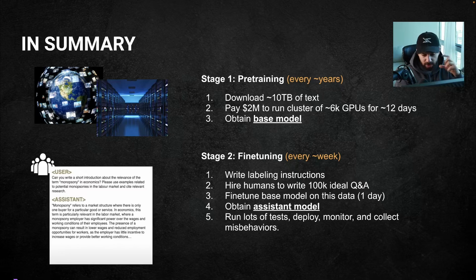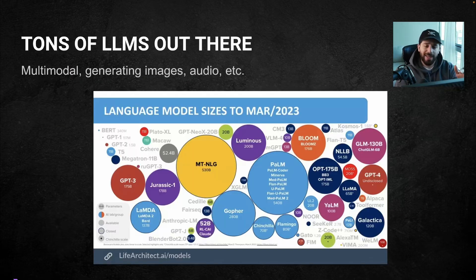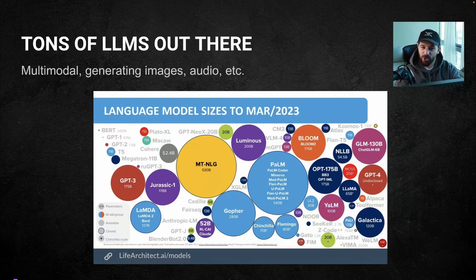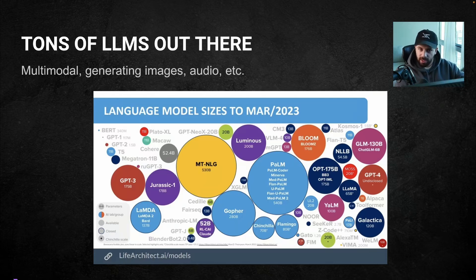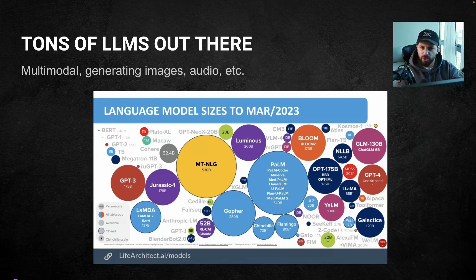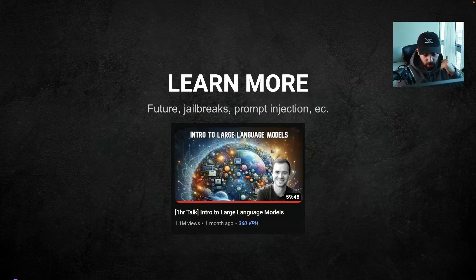There are a ton of LLMs out there and more are coming at a very frequent cadence — this diagram isn't even the latest. There are also multimodal models, which are trained not just on text but also on images and audio, meaning they can generate much more than just text. For example, in GPT right now you can provide images and there's audio functionality, and as it grows you'll be able to do more and more things.